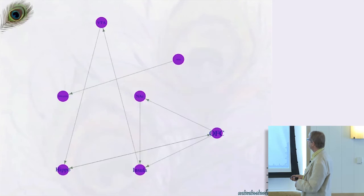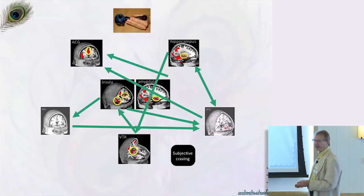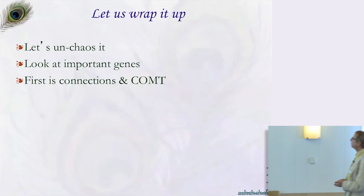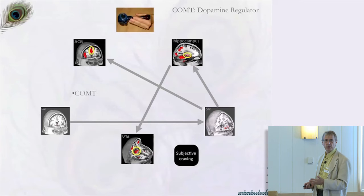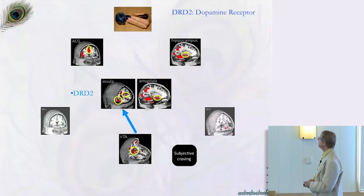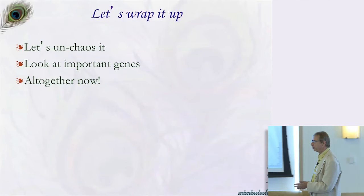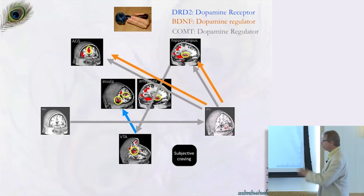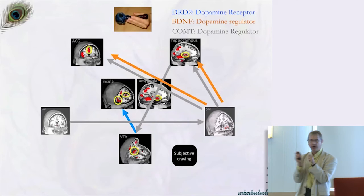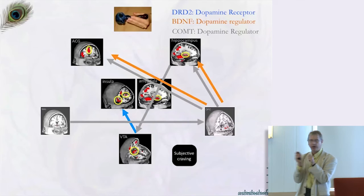Putting results together as a graph, everybody connects to the orbitofrontal cortex. There's a cliquish subnetwork and a separated network going to the amygdala. For dimension two, the dopamine regulator again appears. Breaking the results down by gene, we get subnetworks mediated by COMT, BDNF, and DRD2, each with their own pretty color — dissociated by variability in genes matched by variability in connections.